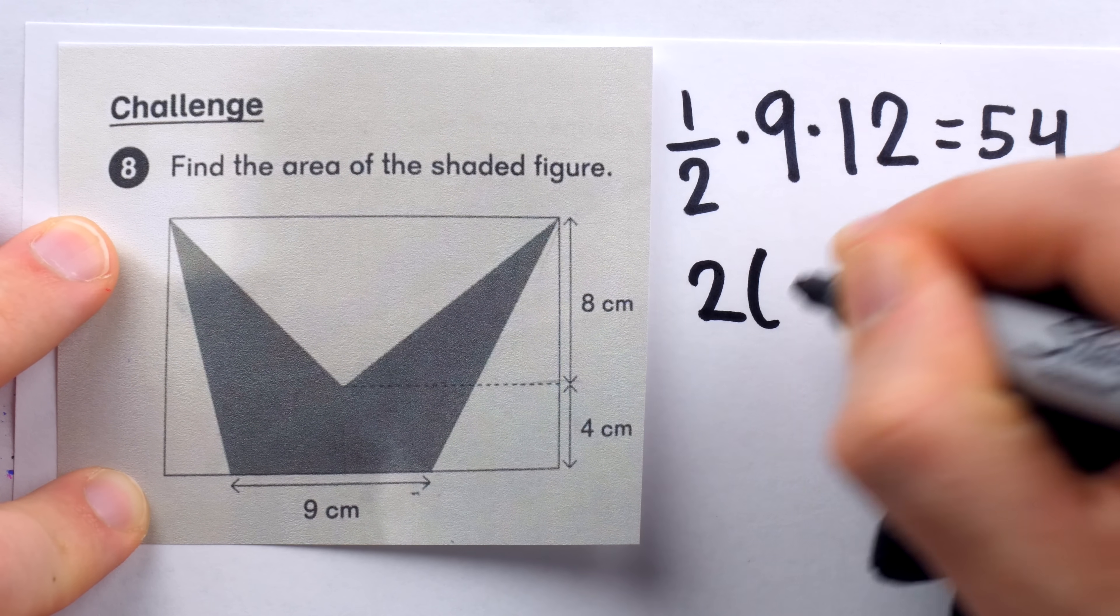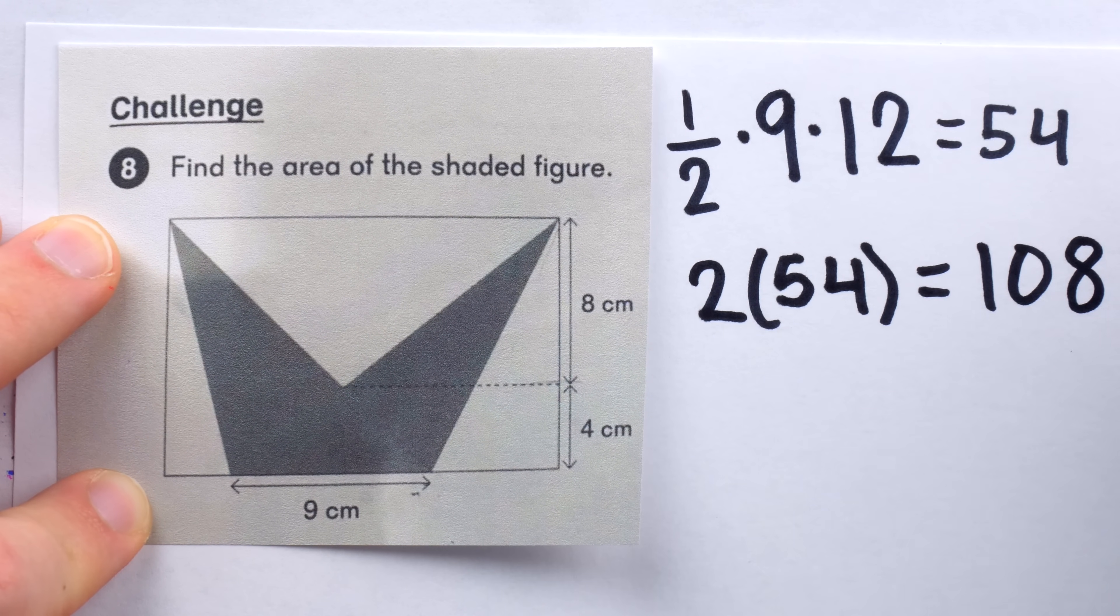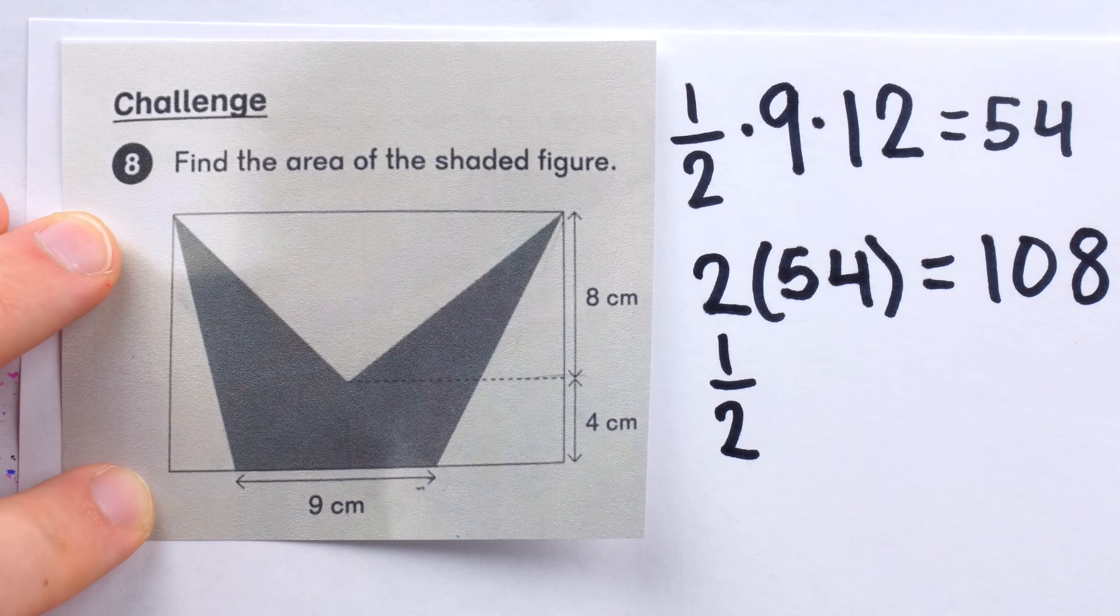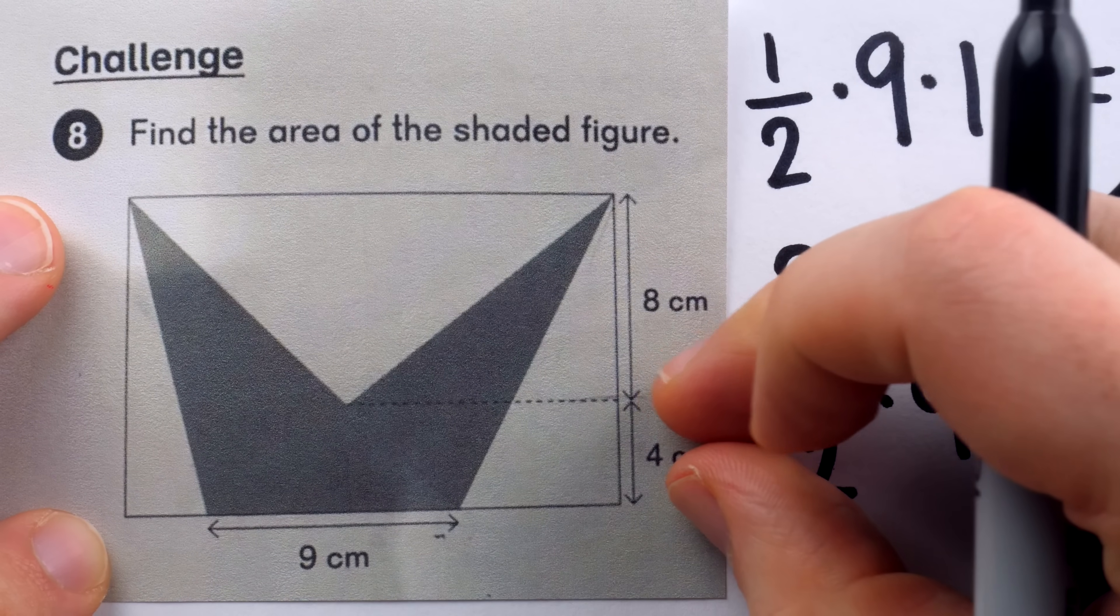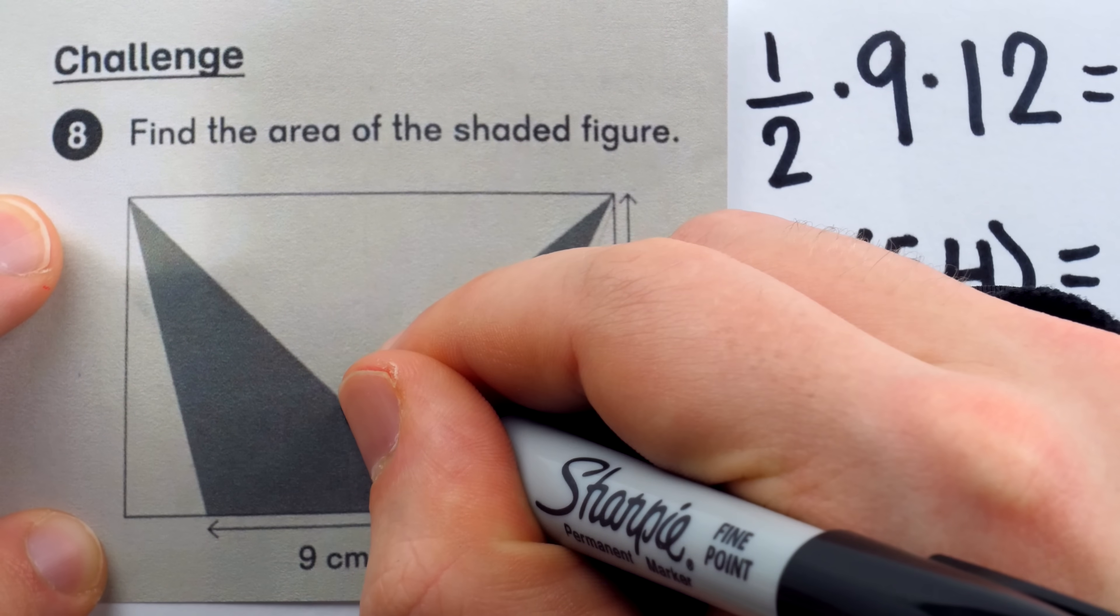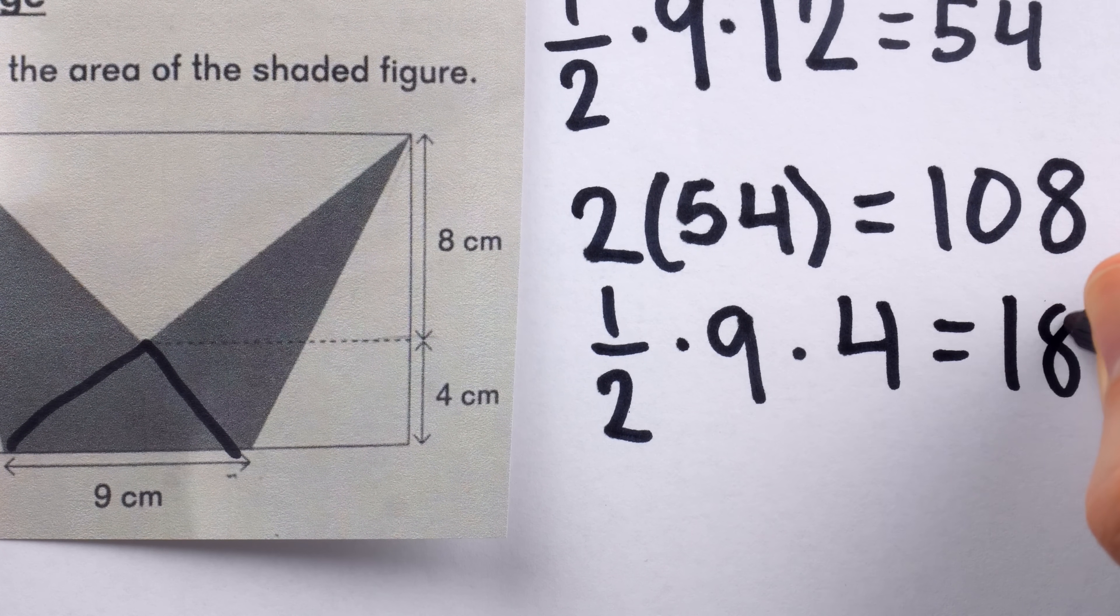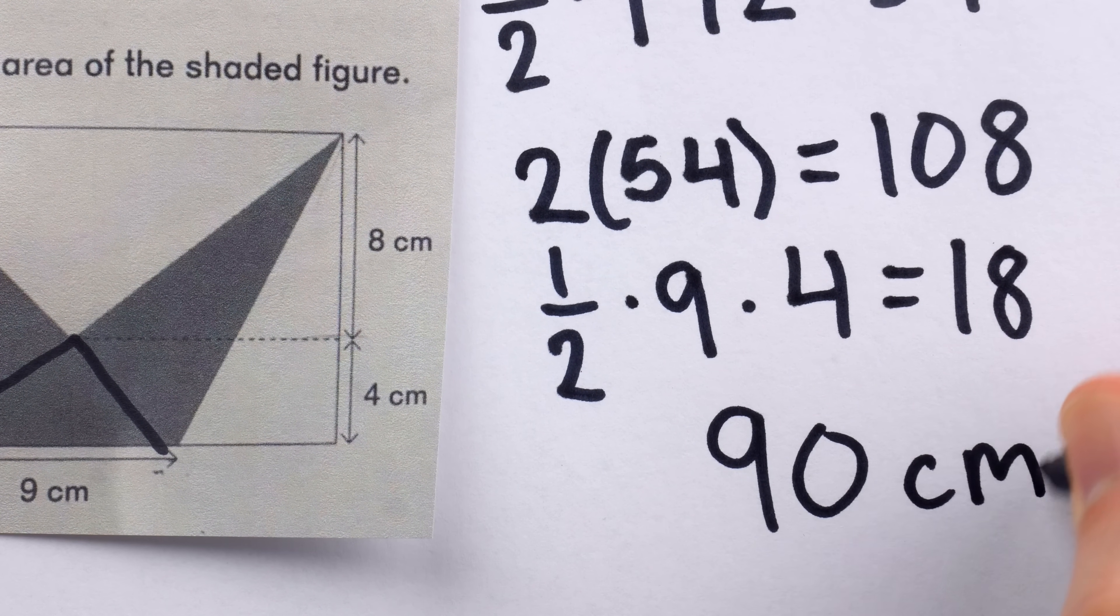Adding the areas of the two triangles together, we have two times 54, which is 108, and then we need to subtract the area of their intersection, because we don't want to count that area twice. The area of the intersection is also a triangle. So one-half base, which is nine centimeters, times the height. That's why we have this little four here that's telling us the height of the intersection point. One-half times four is two, times nine is 18. Taking 18 away from 108, we arrive at a final answer of 90 centimeters squared.